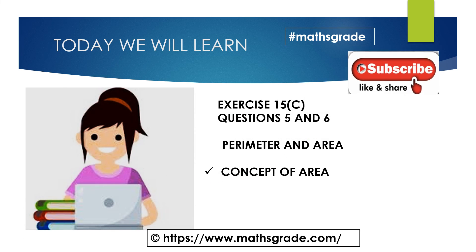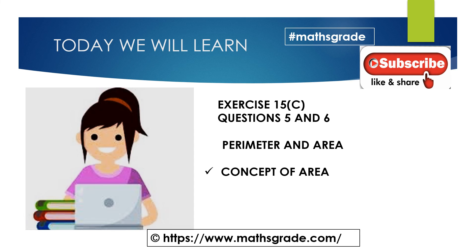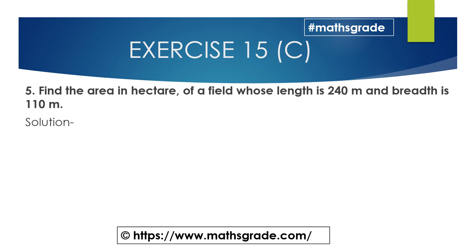The topic is concept of area and perimeter. Question number 5: find the area in hectares of a field whose length is 240 metres and breadth is 110 metres. This is the field.